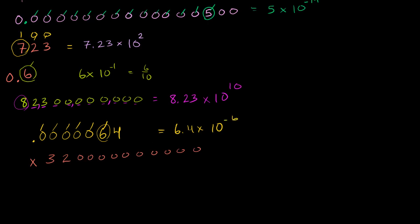And the large number can be written as 3.2 — and then you count how many digits are after the 3: 1 through 11. So 3.2 times 10 to the 11th. So if we multiply these two things, this is equivalent to 6.4 times 10 to the minus 6 times 3.2 times 10 to the 11th.